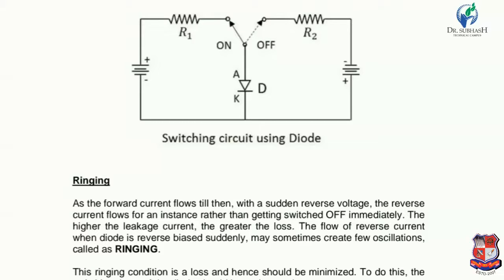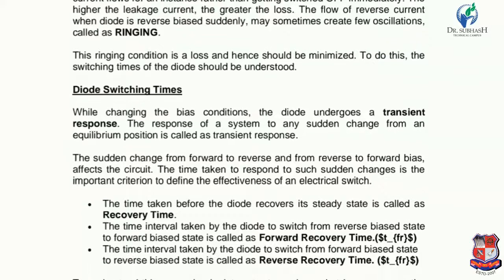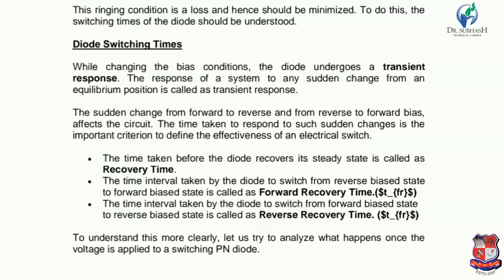To reduce ringing, it is very important to know the switching times of the diode. Switching time refers to the time while changing the bias condition — going from reverse bias to forward bias or from forward bias to reverse bias. During this transition, the diode undergoes a transient response. The response of a system to any sudden change from one equilibrium position to another is called a transient response.